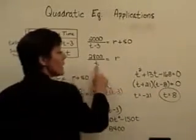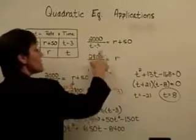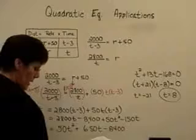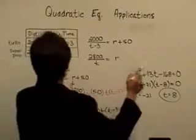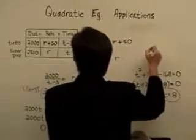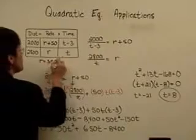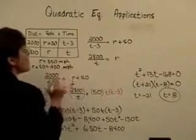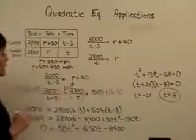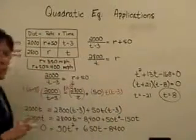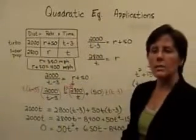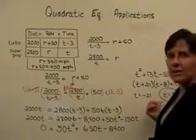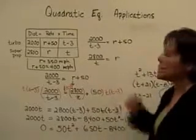Plugging T equals 8 into 2,800 divided by T gives the super prop's rate: 2,800 divided by 8 equals 350 miles per hour. Then R plus 50 equals 400 miles per hour for the turbojet. This is one of the most difficult problems — it involves solving a rational equation from previous work and then solving the resulting quadratic. I solved for T first, then had to go back to the original equations to get the values for R.